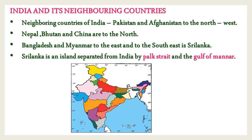Children, the next concept is India and its neighboring countries. Observe page number 231. The neighboring countries of India are Pakistan and Afghanistan to the northwest; Nepal, Bhutan, and China to the north; Bangladesh and Myanmar to the east; and to the southeast is Sri Lanka. Sri Lanka is an island separated from India by the Palk Strait and the Gulf of Mannar. Once you refer to the textbook page number 231 - neighboring countries of India - observe carefully.